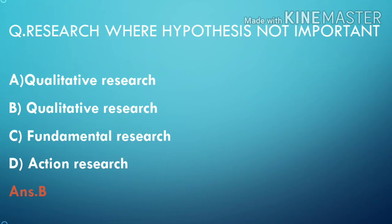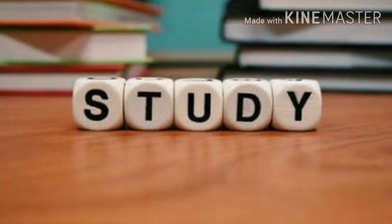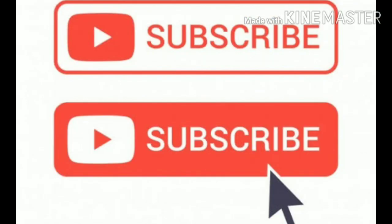Moving to the last question: research where hypothesis is not important — options are: qualitative research, quantitative research, fundamental research, and action research. The answer is qualitative research, as it is the type where hypothesis is not important. With this, we are concluding. Till my next video, keep on preparing for your exam. If you like this video, please click on the like button and subscribe for more videos. Thank you.